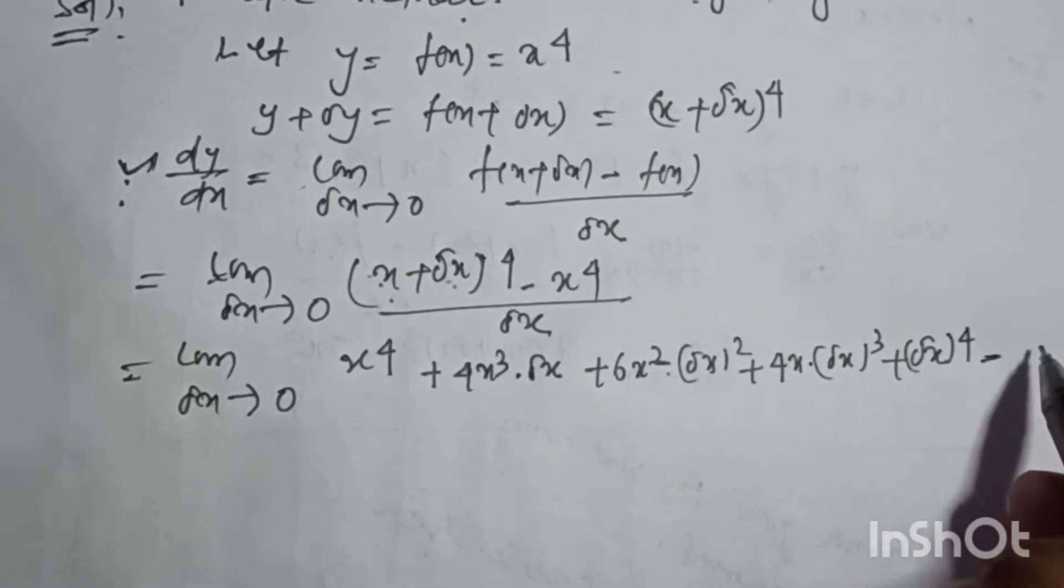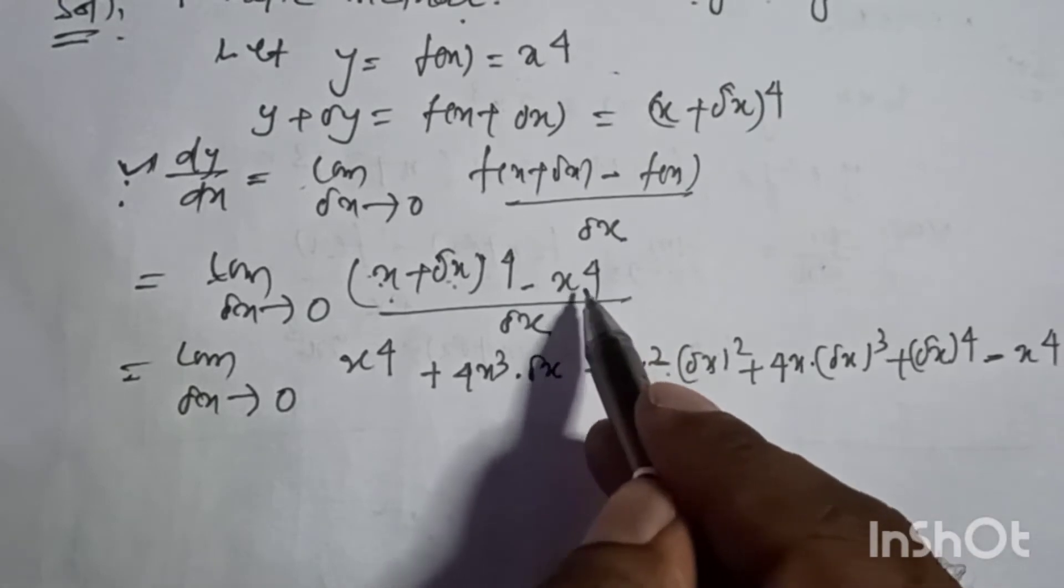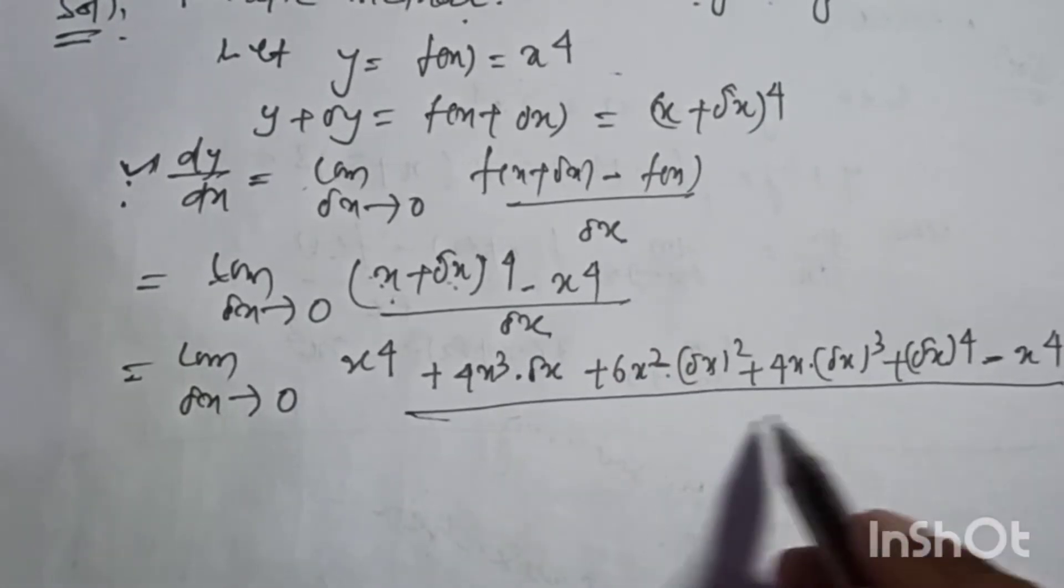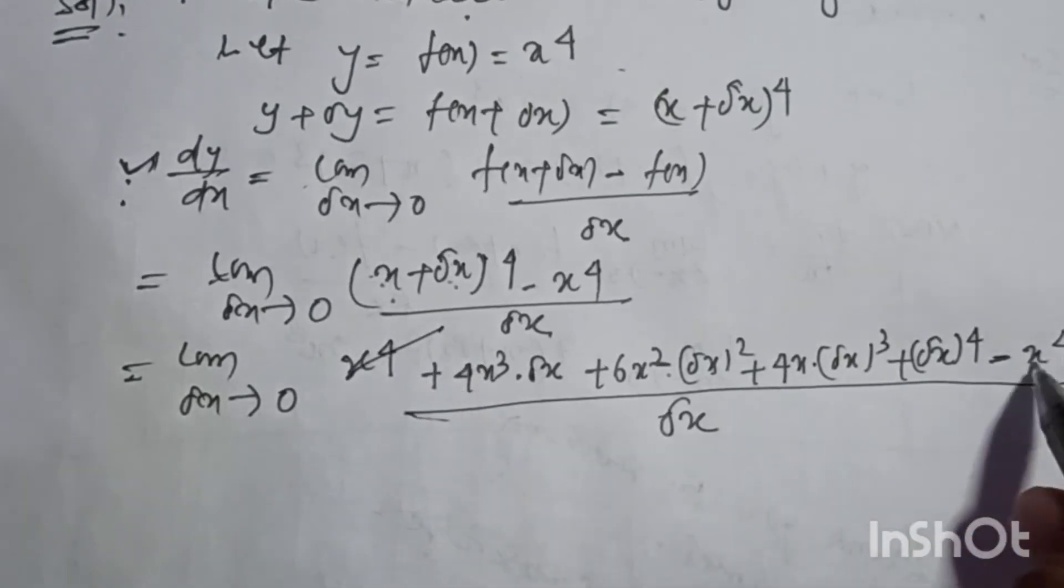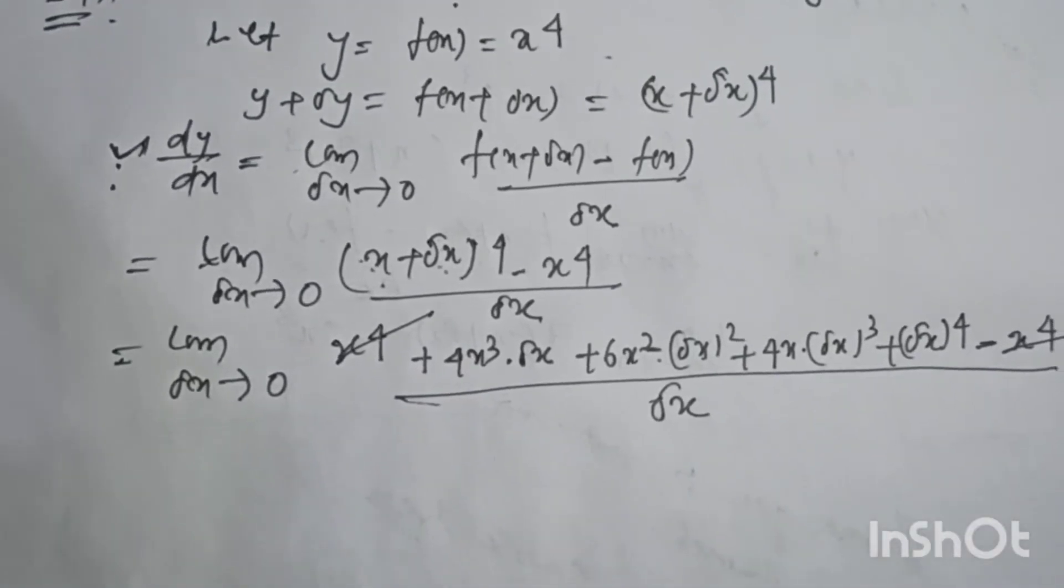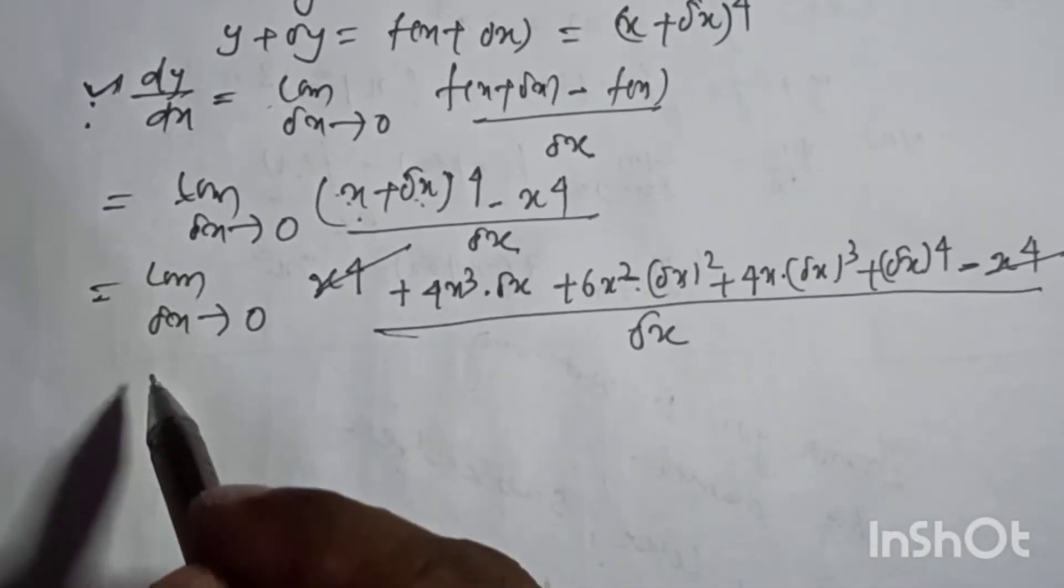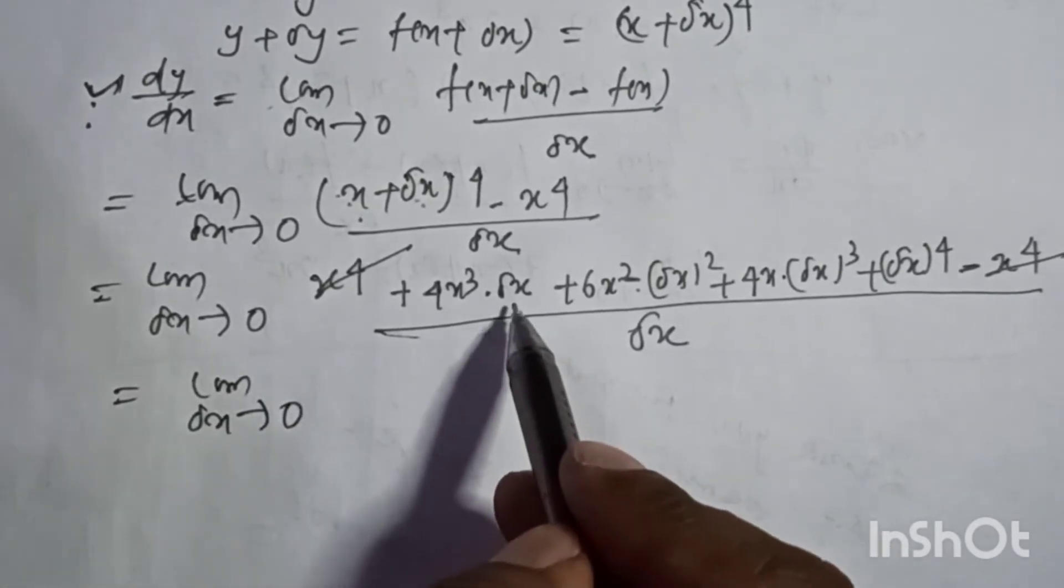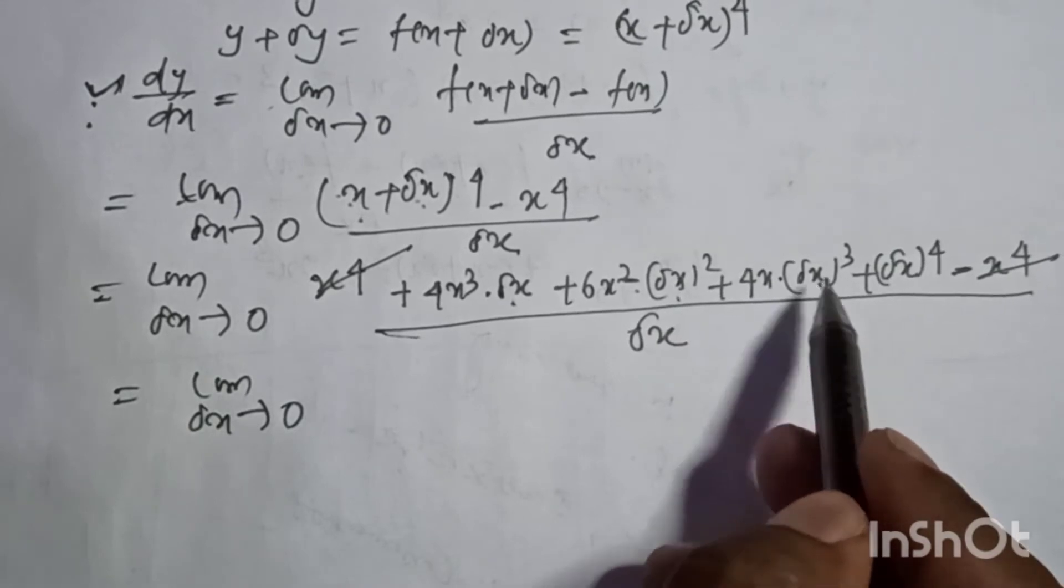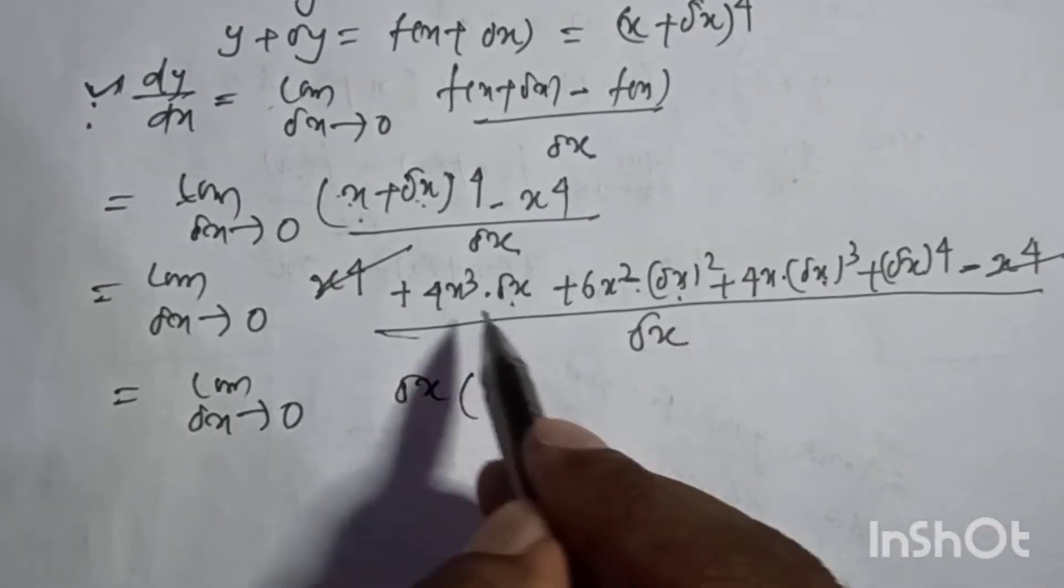Minus x to the power 4, the whole divided by del x. X to the power 4 and minus x to the power 4 cancel out.